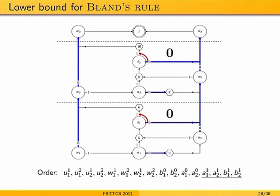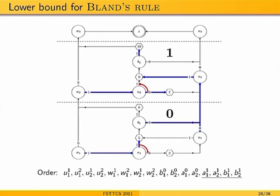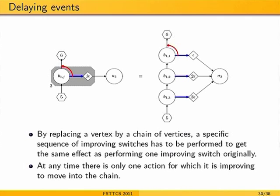For the random pivot rule, we add gadgets that delay each switch by replacing each vertex with a path — a longer cycle. For the switch to happen, all edges along the path must point in the required direction. Different vertices get paths of different lengths, so that competing switches can be ordered with high probability: the shorter chain closes before the longer one.